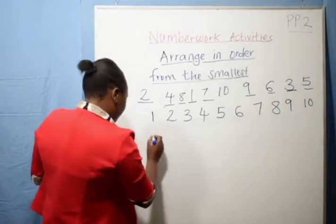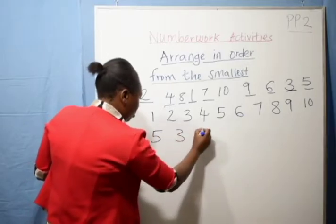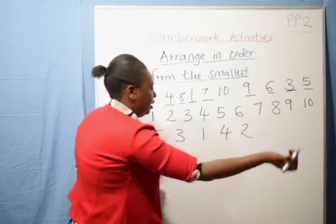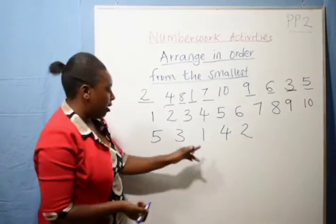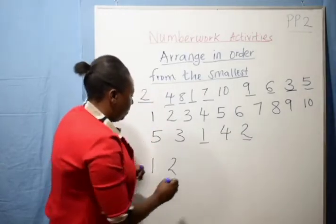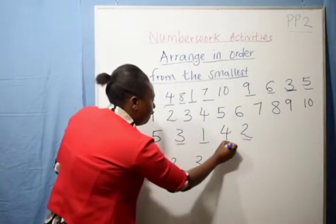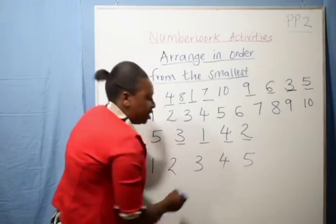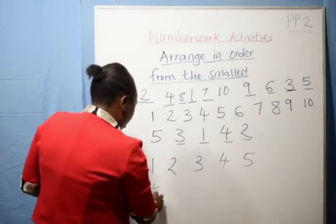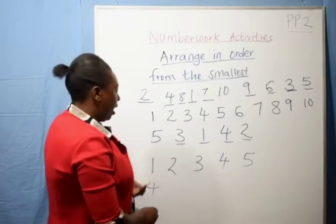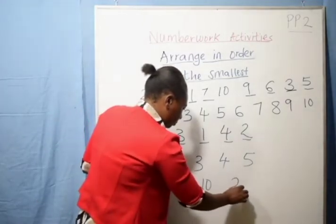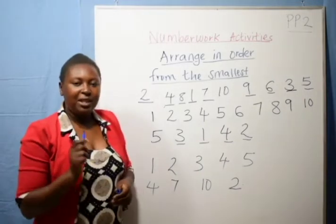Let me do another sum — let me challenge you a little bit. Let us mix this: we have five, three, one, four, and two. Still the same — which is the smallest number? The smallest number is one, followed by two, followed by three, followed by four, and then number five. What if I mix these numbers? For example: I have four, I have seven, I have ten, and I have two. Which is the smallest number there?